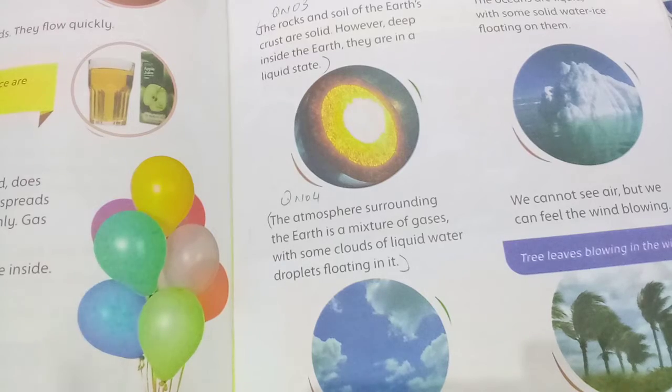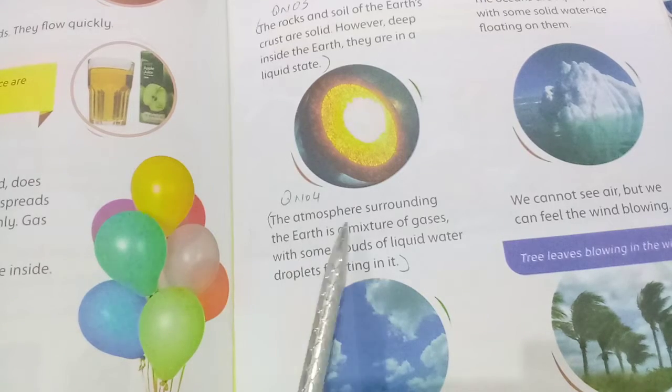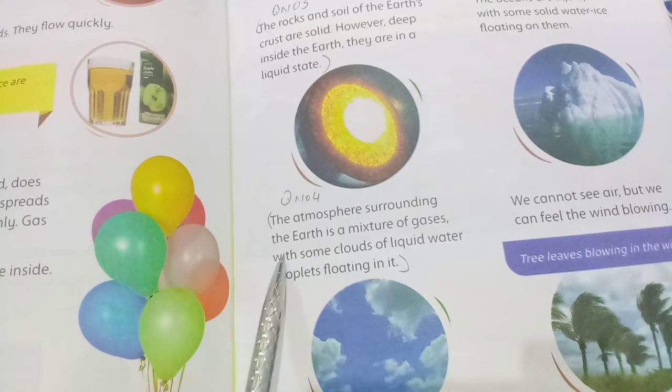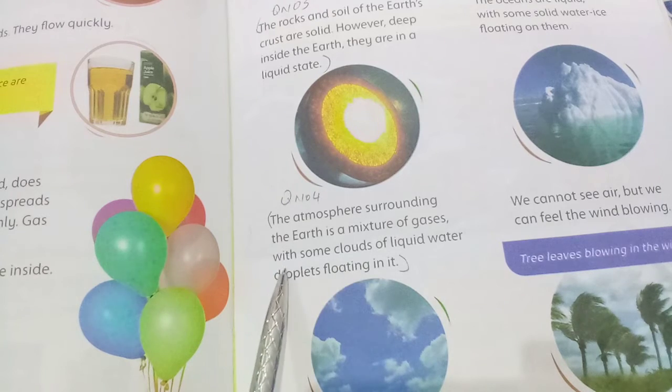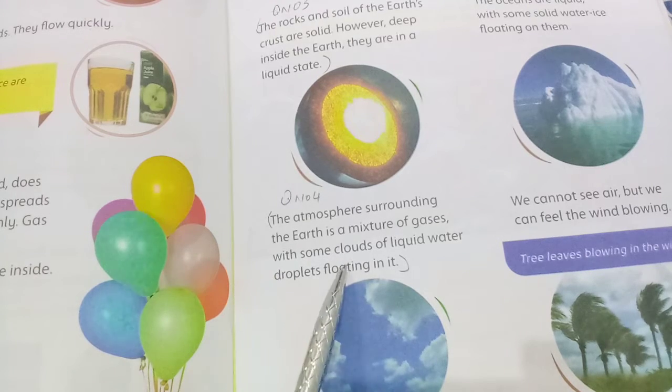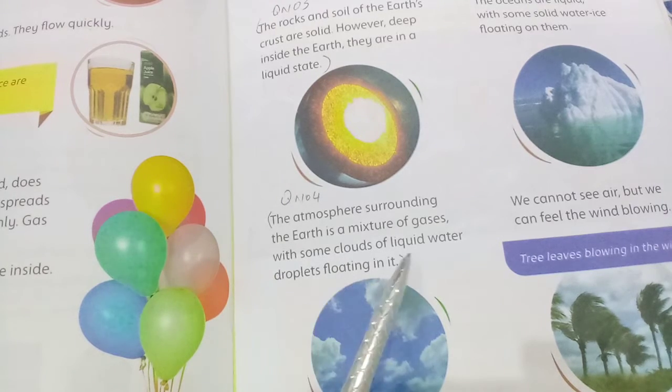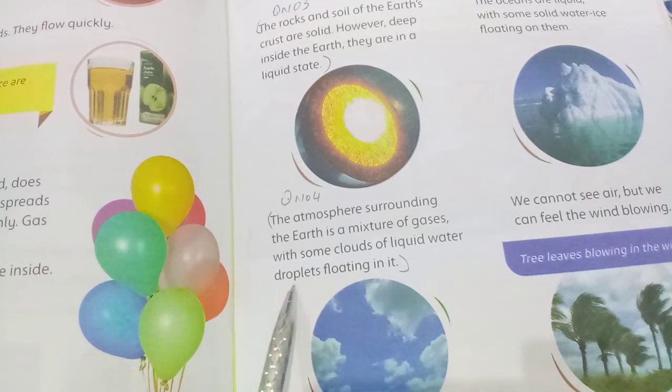Describe earth's atmosphere. The atmosphere surrounding the earth is a mixture of gases with some clouds of liquid water droplets floating in it.